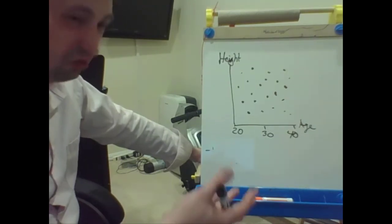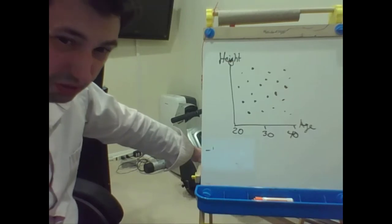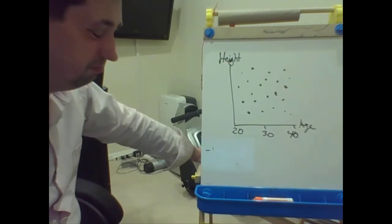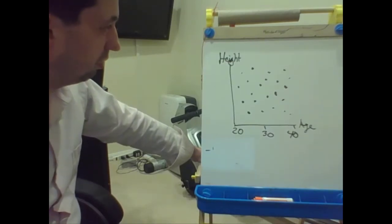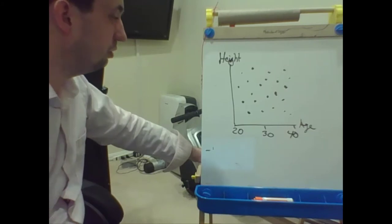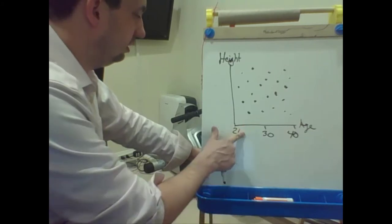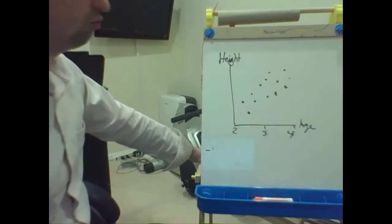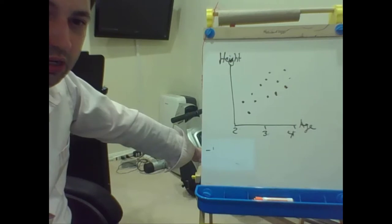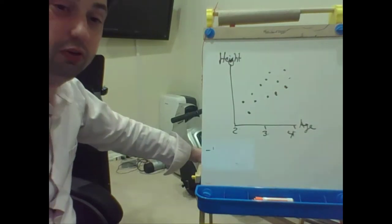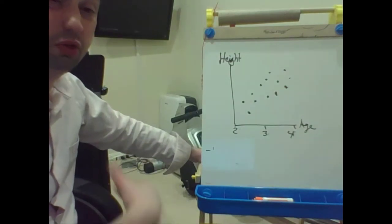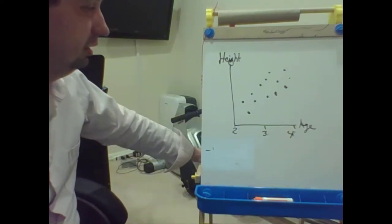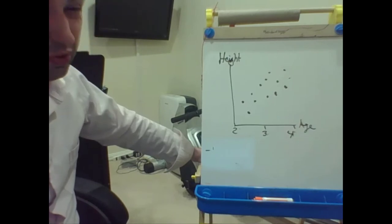Once you hit your height, you're basically done. For adults, there's no correlation. But for school-aged kids and young kids, there's a very strong correlation — not perfect, because other things matter, and it's a little noisy, but not that noisy.